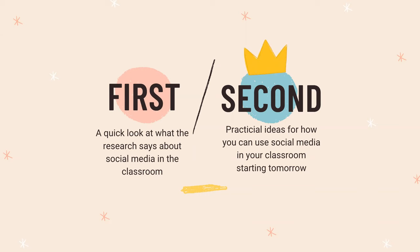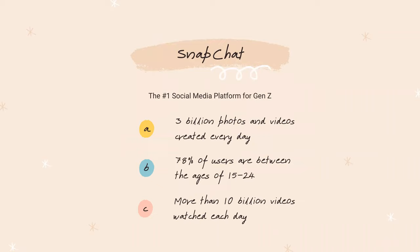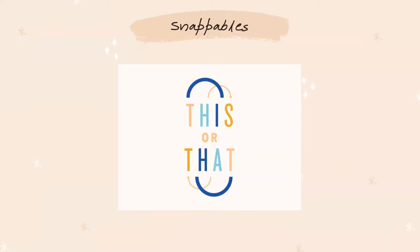We're going to look at the research using Snapchat. Snapchat is the number one social media platform for Gen Z. Three billion photos and videos are created every day. Seventy-eight percent of users are between the ages of 15 and 24, and more than 10 billion video views are logged on Snapchat every day. Snappables are Snapchat games based on interactive lenses that overlay your camera. One Snappable I use in my courses is called This or That, where you present your audience with two choices and they vote.